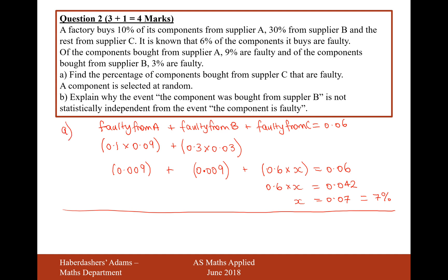Let's now move on to part B. A component is selected at random. Explain why the event the component was bought from supplier B is not statistically independent from the event the component is faulty.